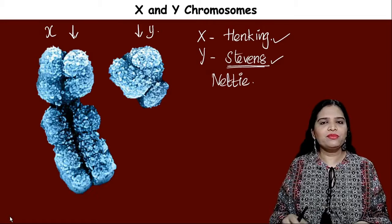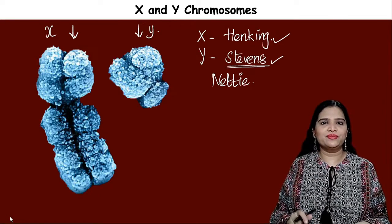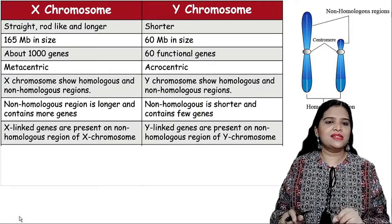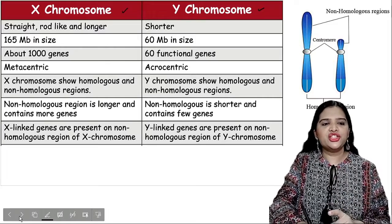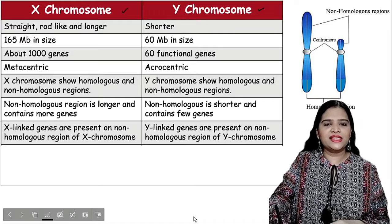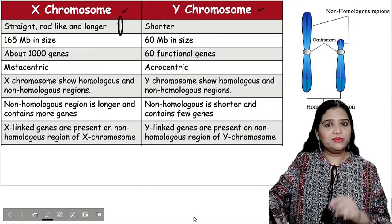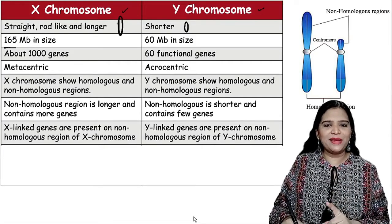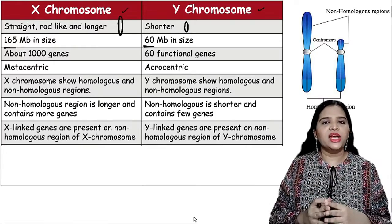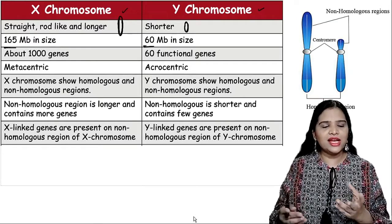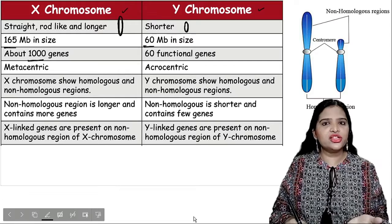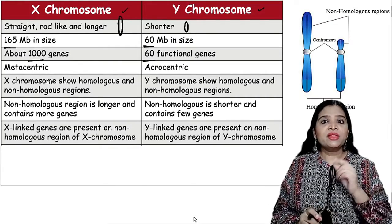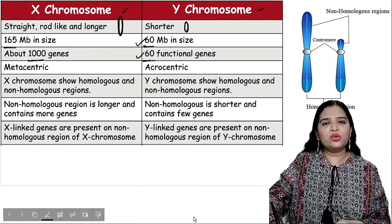The differences between X and Y chromosomes can be seen in a table. In shape, the X chromosome is a straight, rod-like, and long structure, while the Y chromosome is comparatively shorter. The size of the X chromosome is 165 Mb, whereas the Y chromosome is only 60 Mb. Because the X chromosome is larger it contains about 1000 functional genes, while the Y chromosome contains only 60 functional genes — easy to remember: 60 Mb and 60 genes.